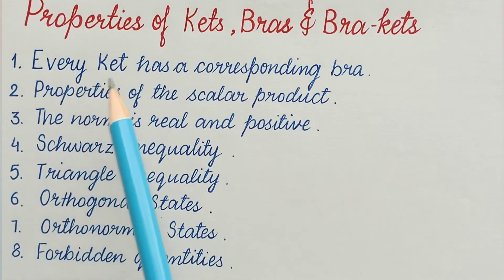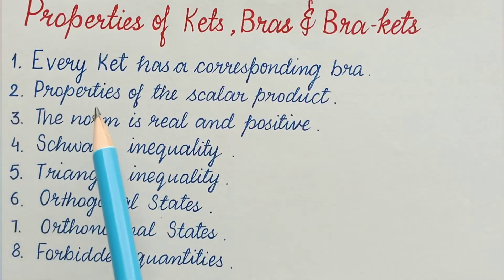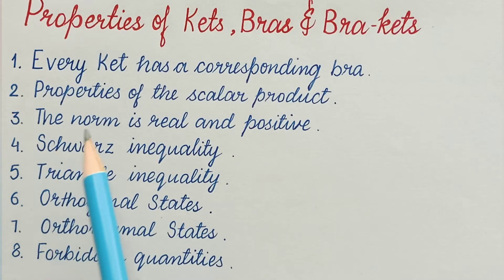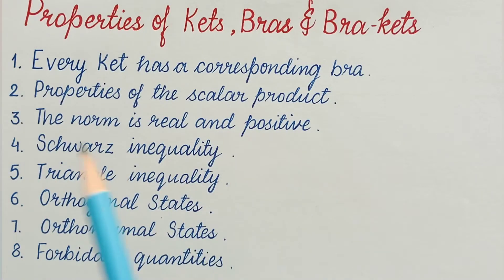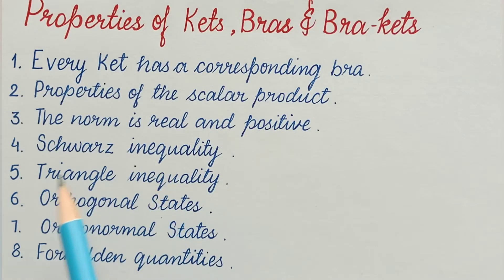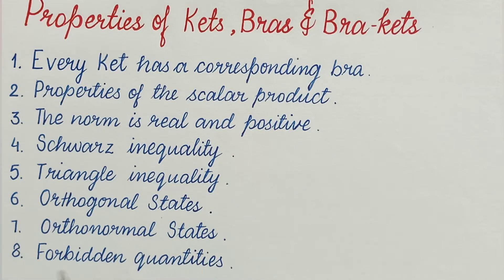The eight topics are: first, every ket has a corresponding bra; second, properties of the scalar product; third, the norm is real and positive; fourth, Schwarz inequality; fifth, triangle inequality; sixth, orthogonal states; seventh, orthonormal states; and eighth, forbidden quantities.